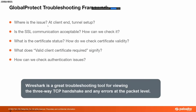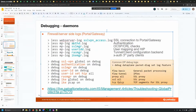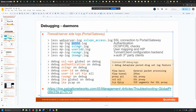GlobalProtect troubleshooting framework: where is the issue? Is it at the client or during tunnel setup? Is the SSL communication acceptable? What is the certificate status? What does a client valid certificate require signify? How can we check authentication issues? Here is a troubleshooting progression: is the tunnel established or not? If it is, troubleshoot as a transit traffic issue, applying data plane troubleshooting techniques. If the tunnel is not established, is the issue related to authentication? If it is, check your system logs, authentication profile, and the authD logs on the firewall side.